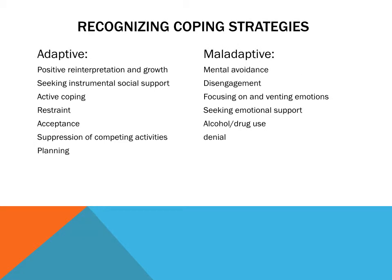This slide recognizes the coping strategies you use, representative of the stage you're in and your personality type. Adaptive coping mechanisms are positive — they include positive reinterpretation and growth, seeking instrumental social support, reaching out, actively coping, awareness, restraint from using substances, acceptance, and planning. Maladaptive coping mechanisms include mental avoidance, disengagement or isolation, focusing on and venting negative emotions, seeking emotional support for negative thoughts, using alcohol or drugs, and denial.